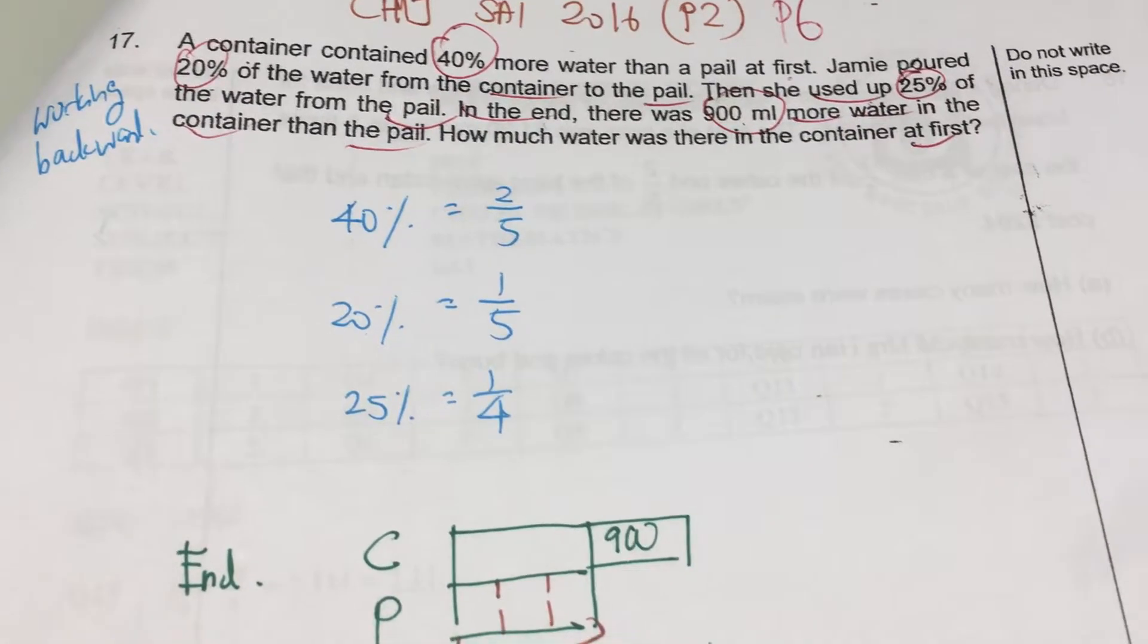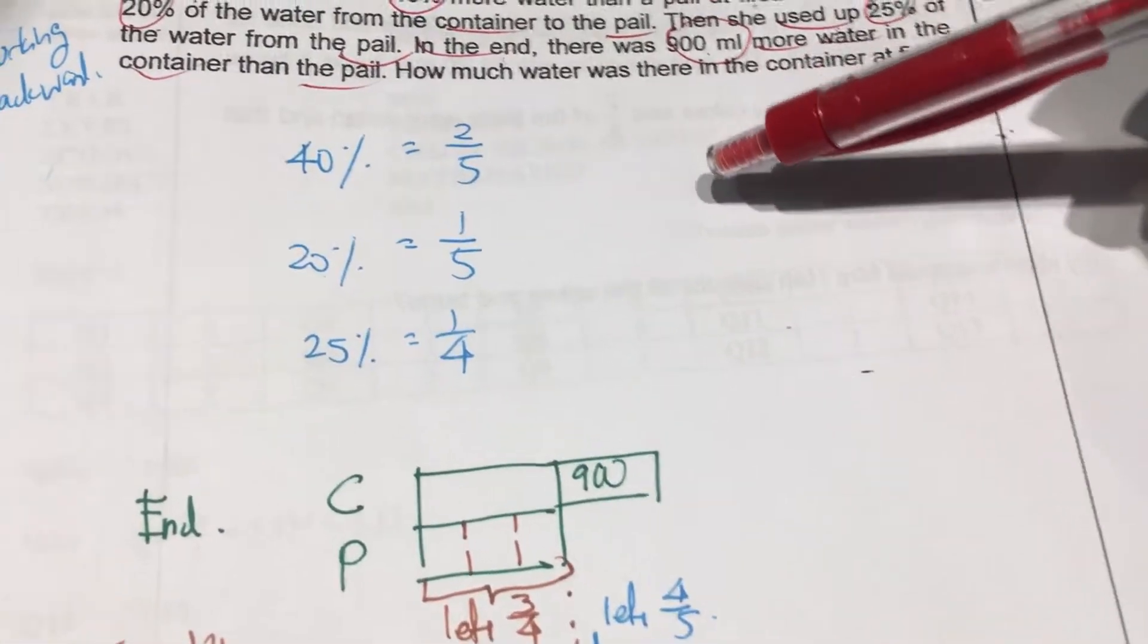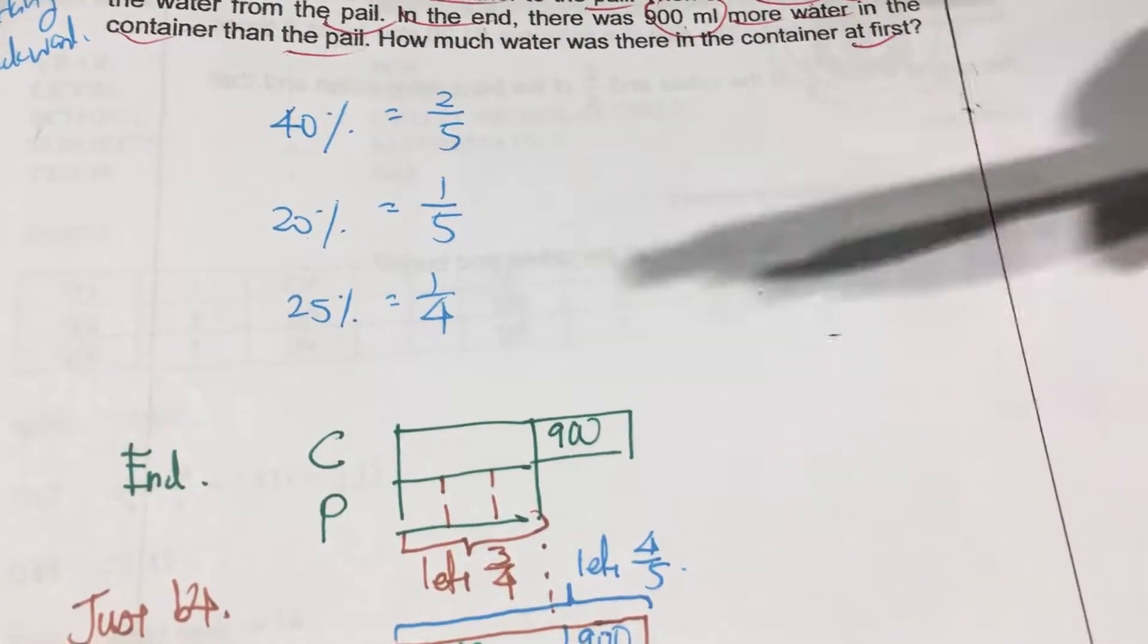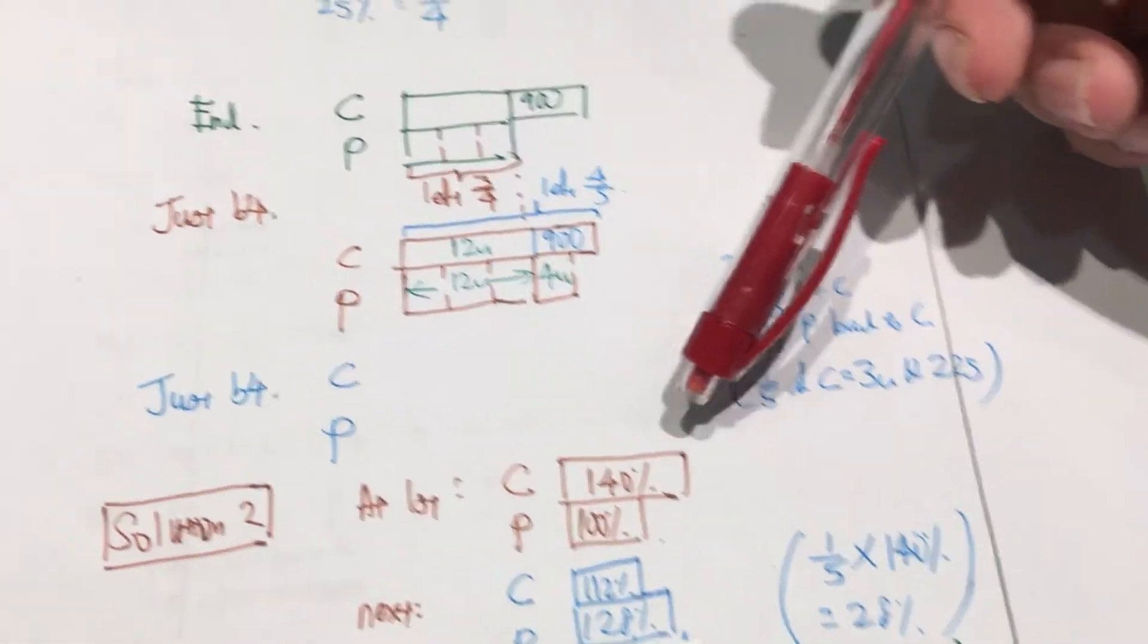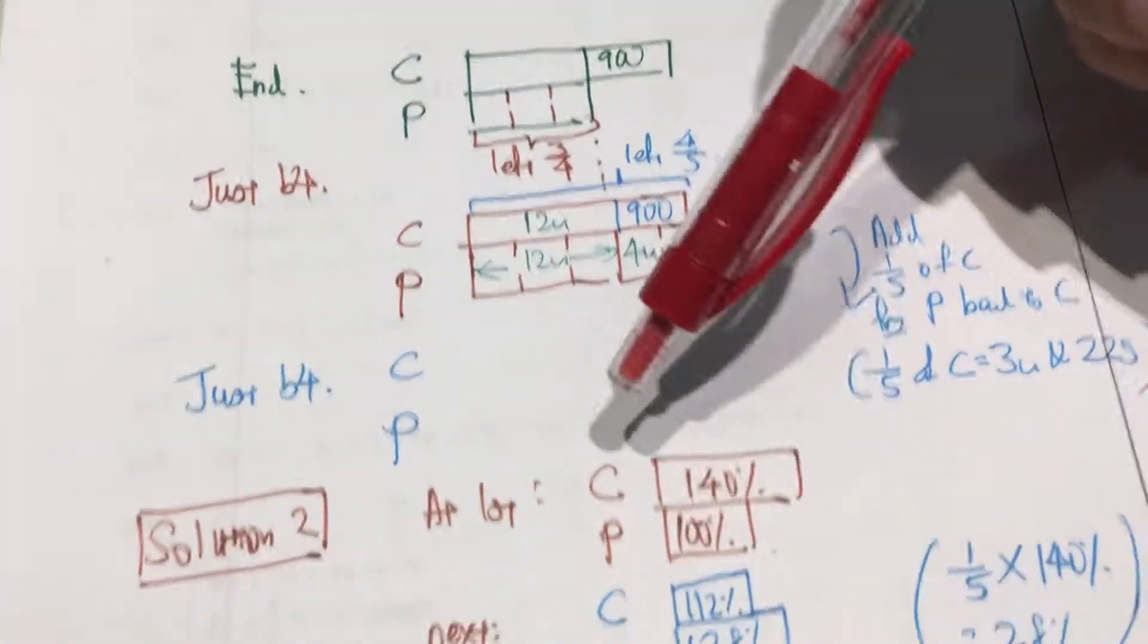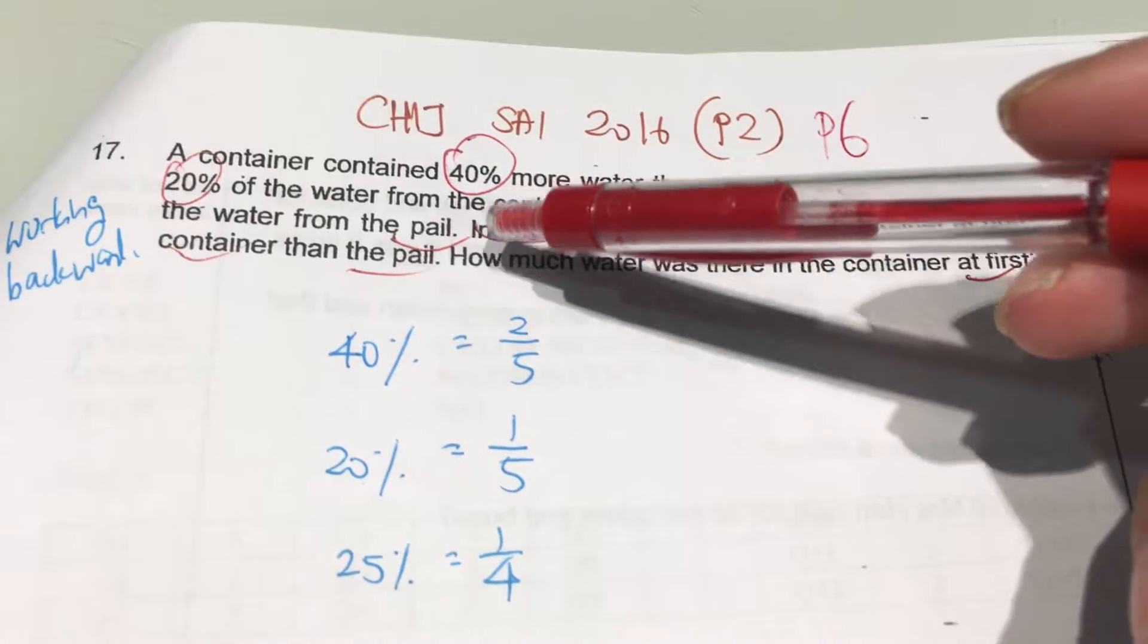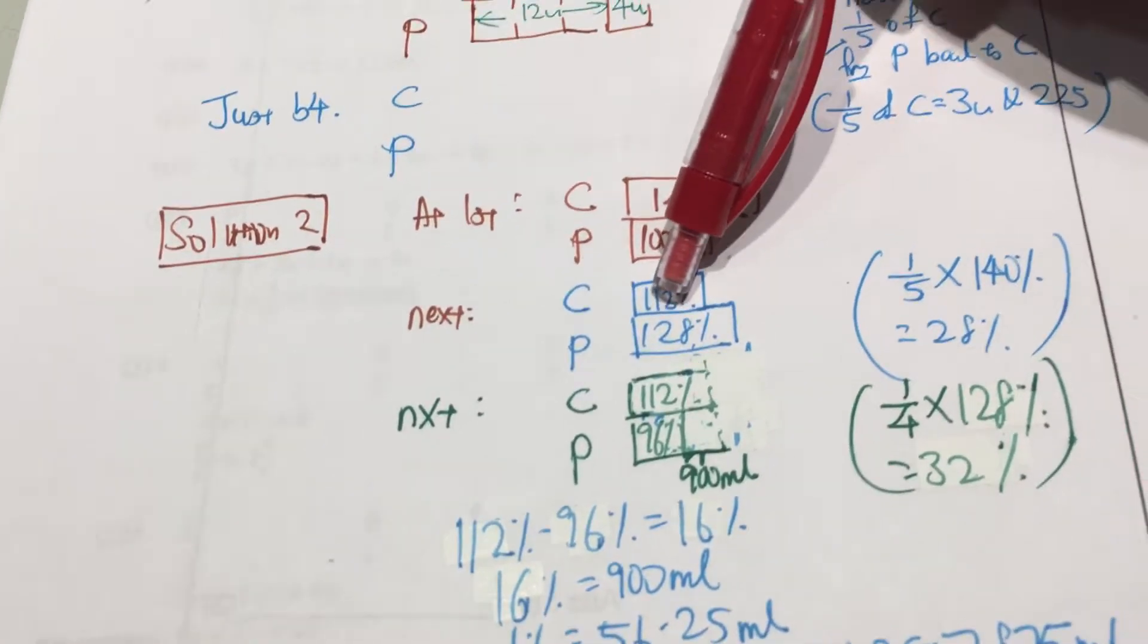Even though they may be wrong. Okay, let's continue from here. After I tried working backwards and it's going nowhere, I worked forward. I started to draw 140% to 100%, which makes it easier to draw. Jamie pots 20% of the water from the container, which means that what I have left is 80%.